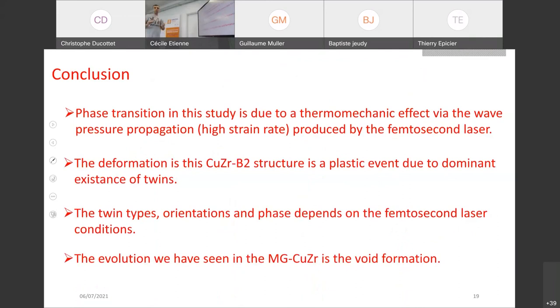What am I saying to you so far? The phase transition in the B2 structure is due to the presence of wave pressure propagation. The deformation is a plastic event dominated by the existence of twins. Those twins have different orientation, different composition, depending on the laser properties. The evolution we have seen so far in the metallic glasses is the void formation. I think I'm done with my presentation. Thank you for your attention. The more questions you ask, the happier I am. Thank you very much.